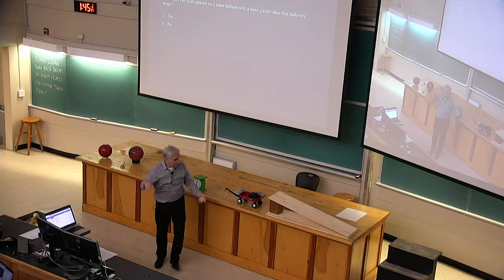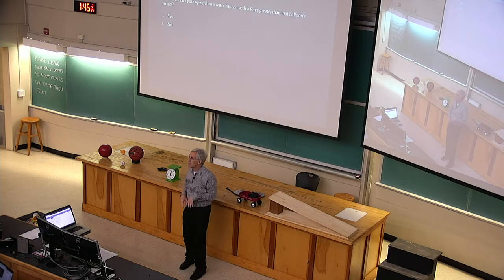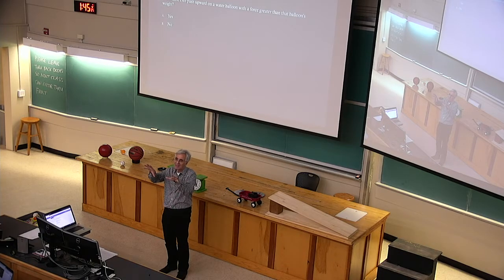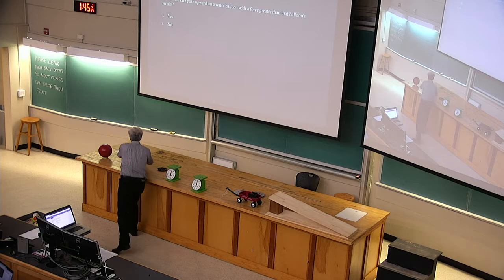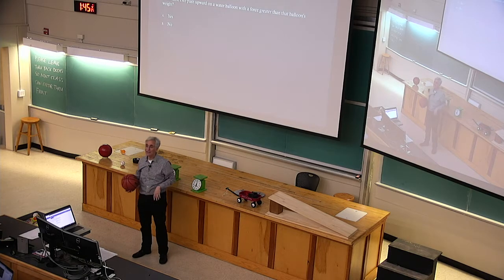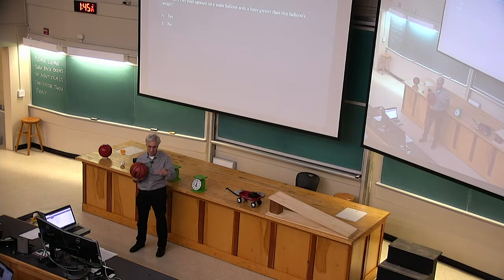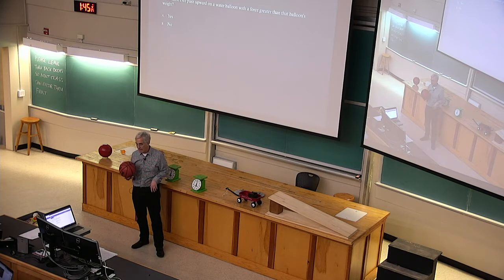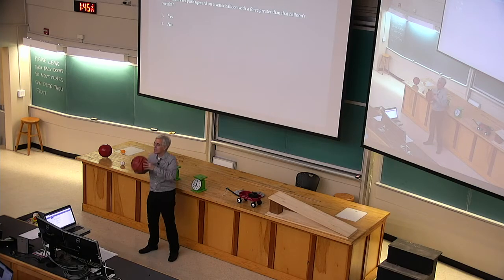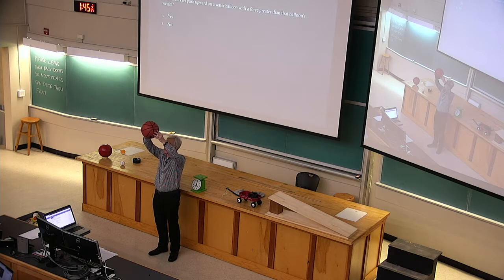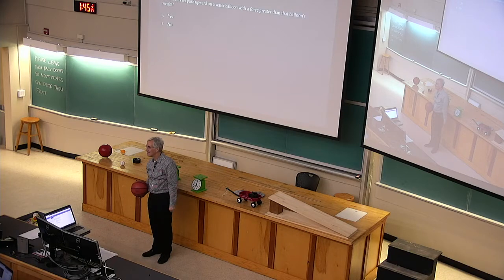Simple machines allow you to do the same work with a smaller force over a longer distance, or vice versa. There are two major categories of energy: potential energy — associated with forces, like stretched rubber bands, wound springs, and objects lifted off the Earth — and kinetic energy, the energy of motion. Gravitational potential energy converts to kinetic energy as a falling object speeds up, and the conversion is perfect — no energy disappears.